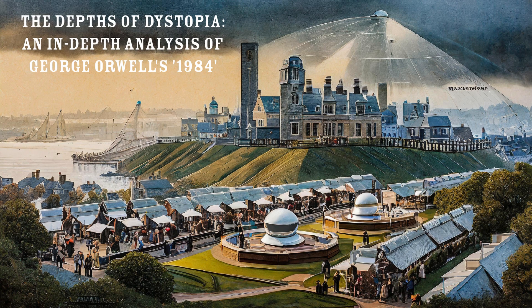Winston's encounter with Julia, a fellow party member whom he suspects of harboring rebellious thoughts, injects intrigue and tension into the narrative. This chapter delves deeper into Winston's disillusionment with the party's propaganda, and his yearning for genuine human connection amidst a society defined by mistrust and suspicion.